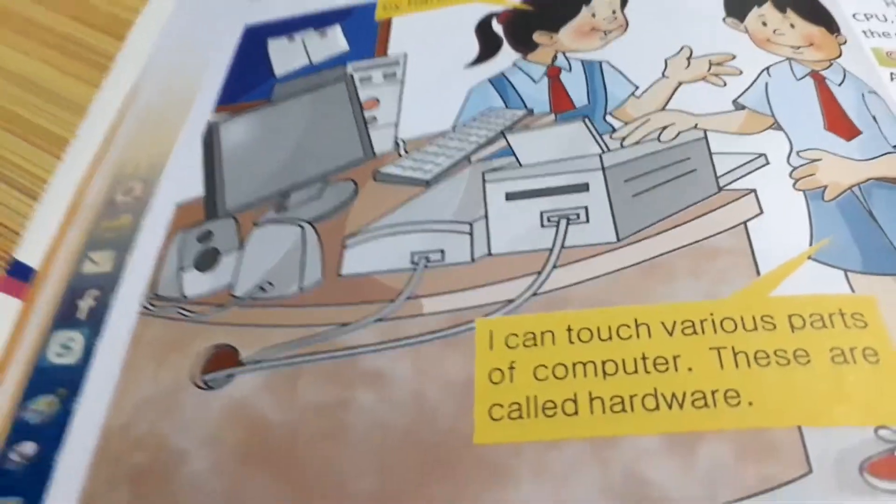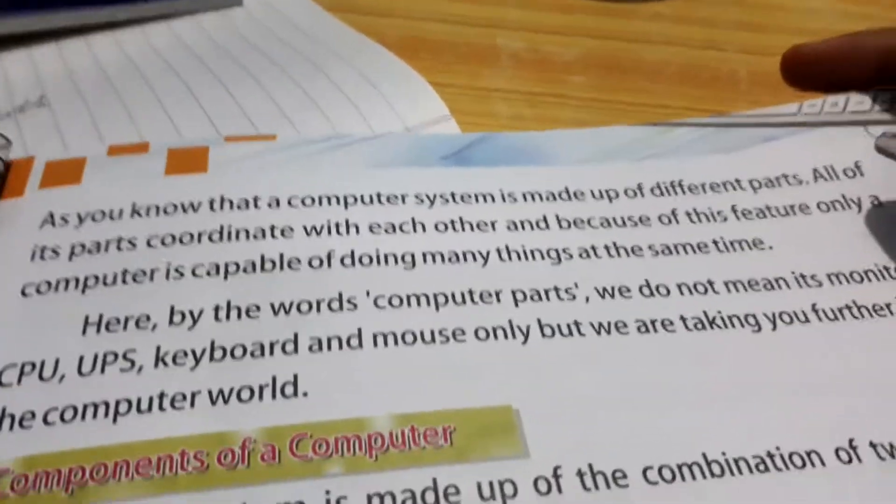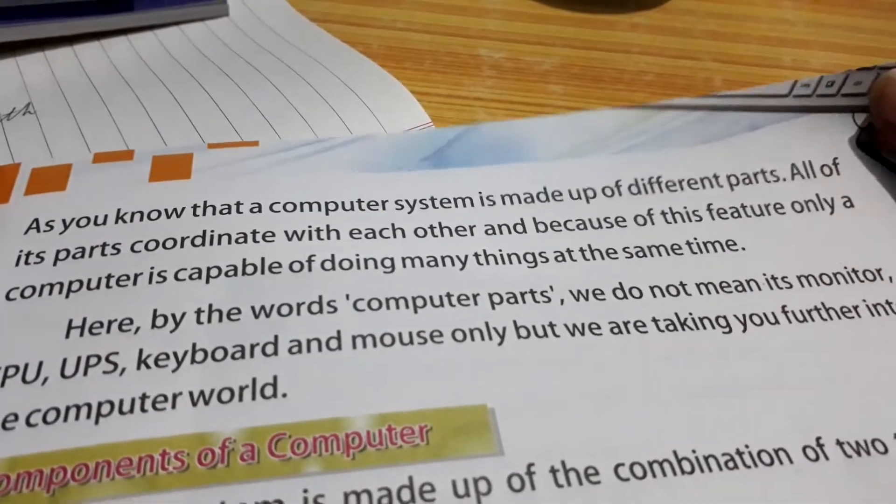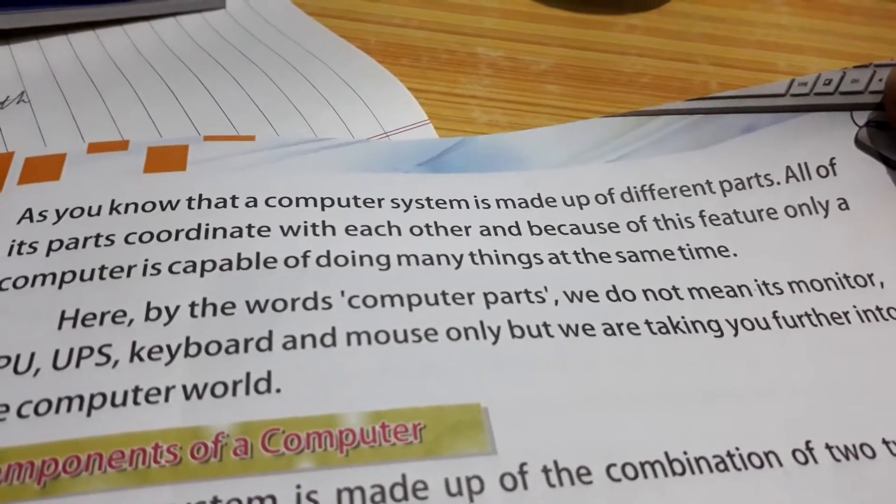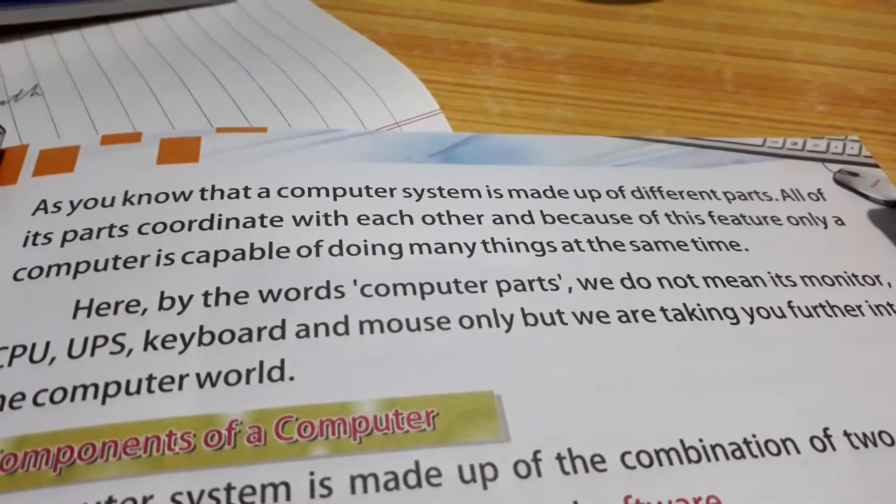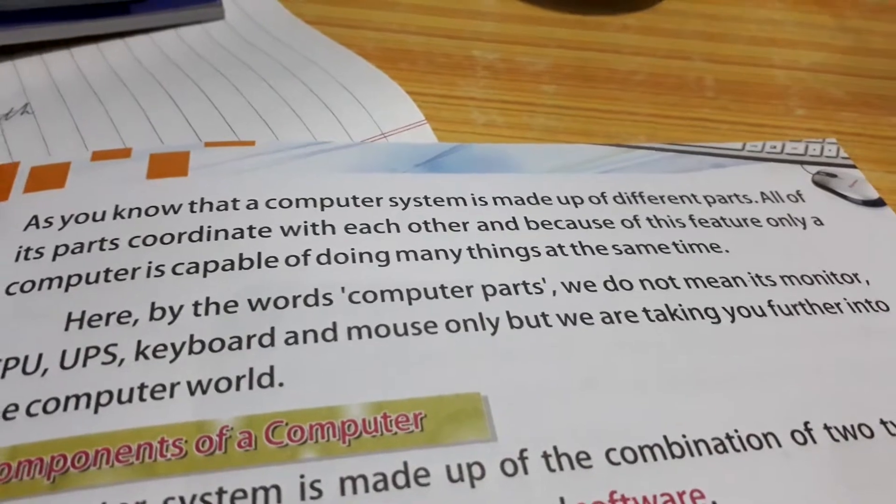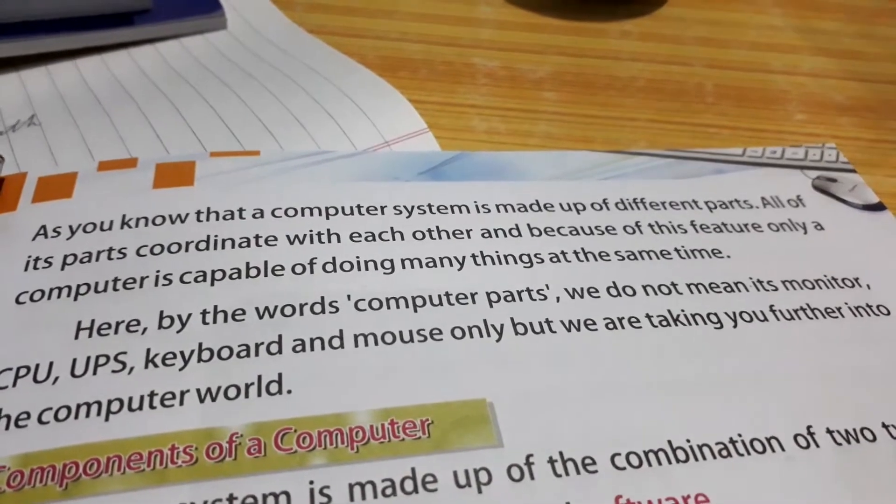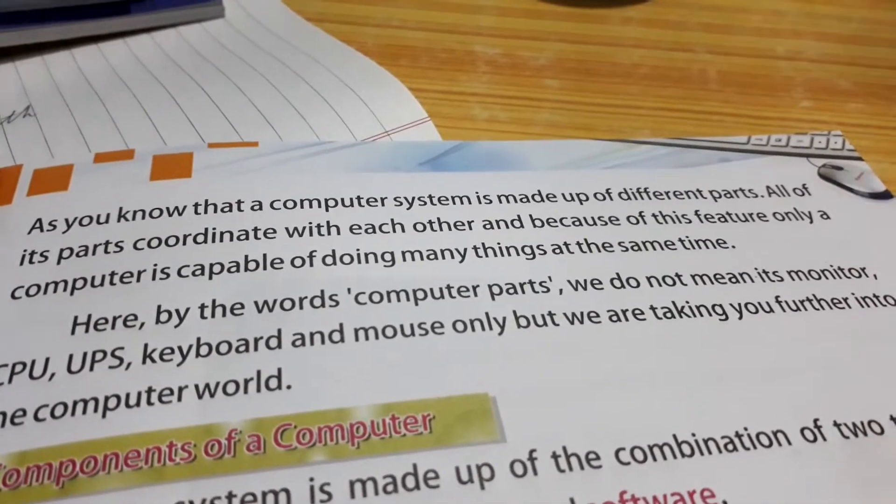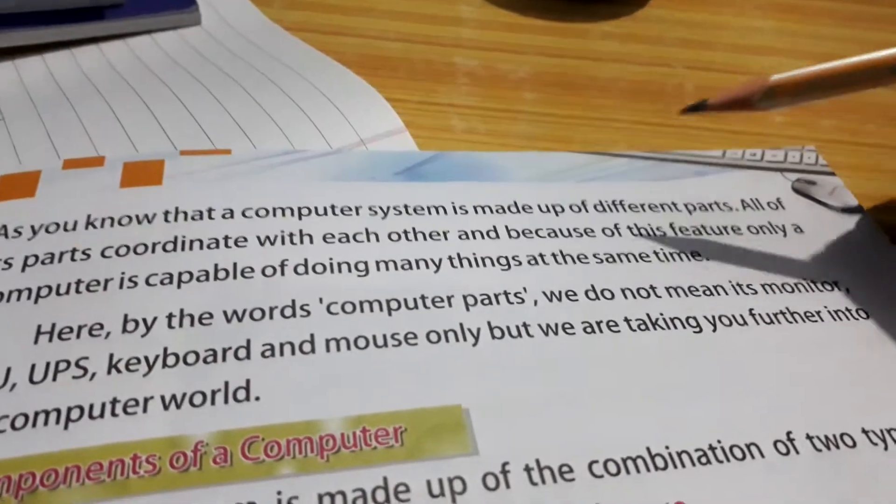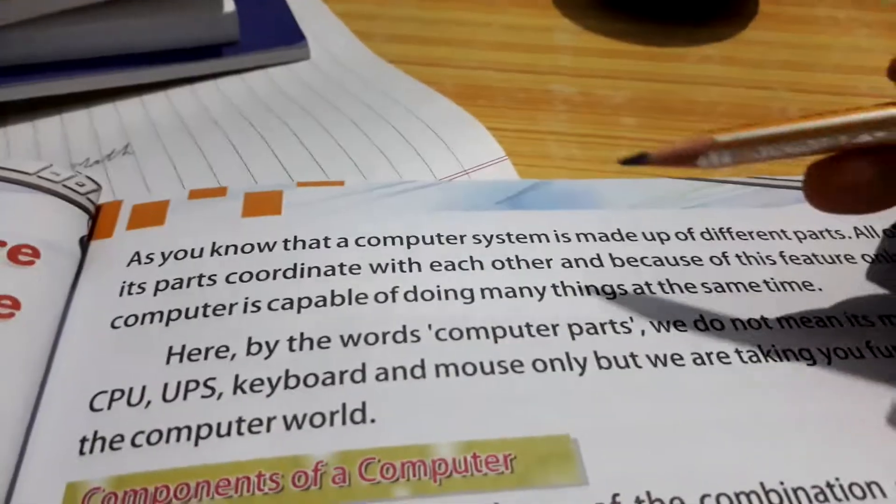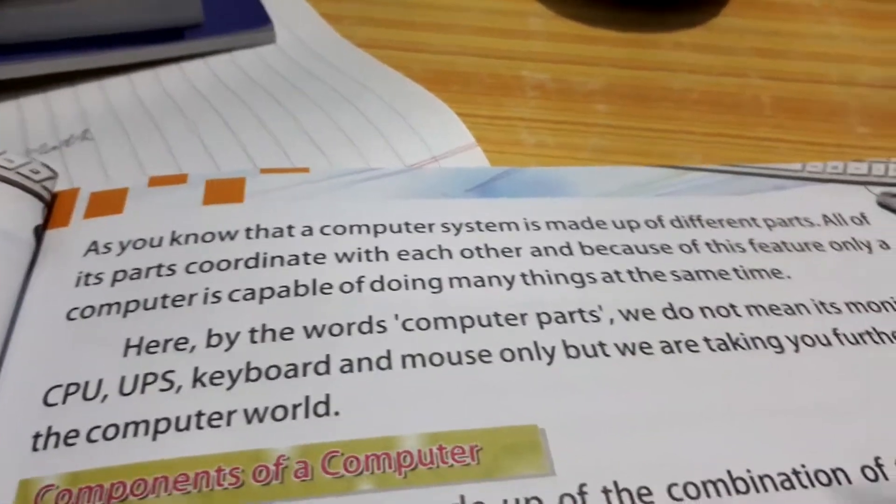Now page number 30. As you know that a computer system is made up of different parts. See everyone knows computer made of different parts. For example, just our body have many parts - fingers, hand, leg, eyes, nose, hairs. There are different parts, same as computer has different different parts.